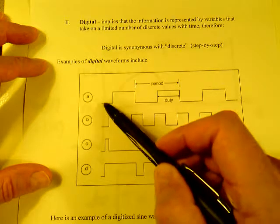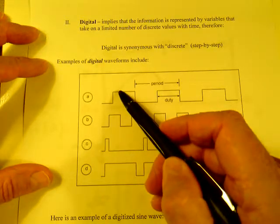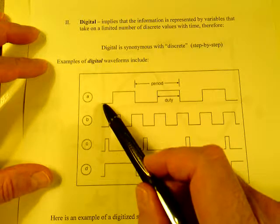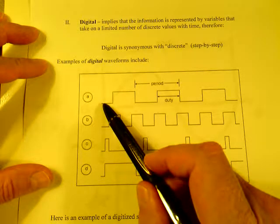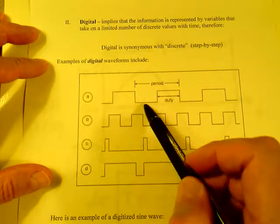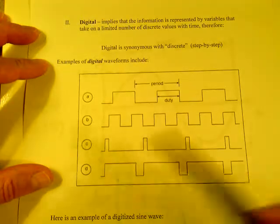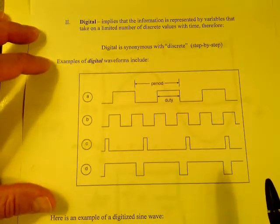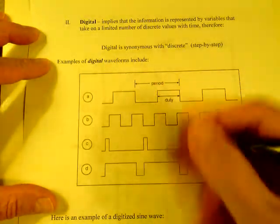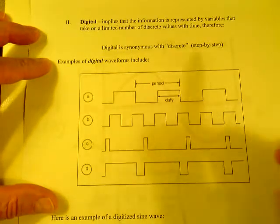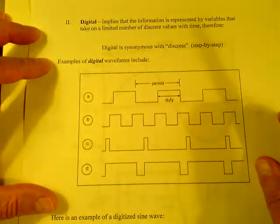So, this waveform varies between zero and a logic one. Zero and a logic one. Matter of fact, all these waveforms do that. They're digital waveforms. There's only two steps. They're binary waveforms, rather. There's only two steps.